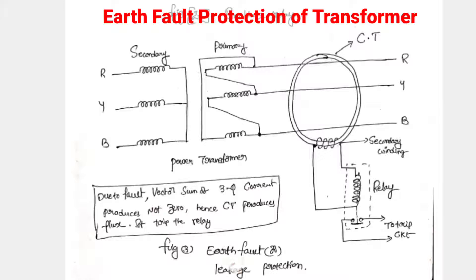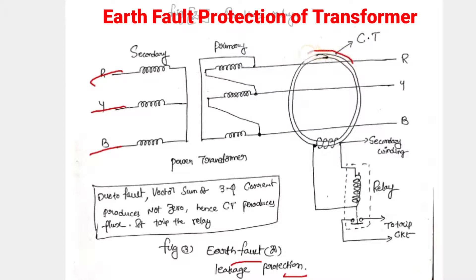The circuit diagram related to earth fault or leakage protection, you can see here. The transformer has secondary winding and primary winding, which we can connect in star as well as delta. The secondary winding is normally star — because the neutral also comes out — and the primary winding is in delta. In the primary winding, we are placing a current transformer in three phases, and the CT secondary winding is connected to the relay coil.